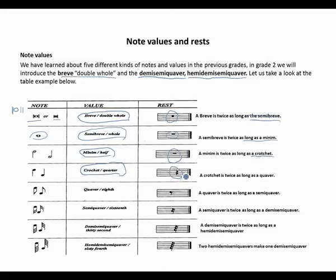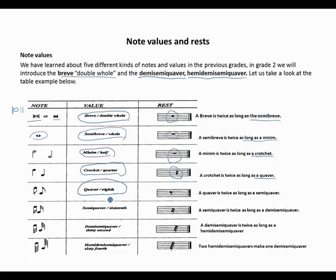A crotchet is half of a minim, also known as a quarter note. This is how a crotchet rest looks. A crotchet is twice as long as a quaver. A quaver is half of a crotchet, also known as the eighth note. This is how the eighth note rest looks.